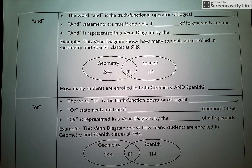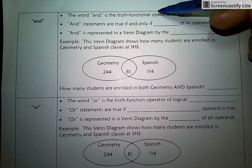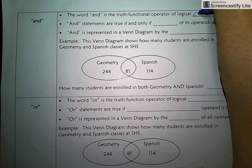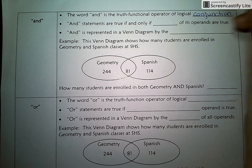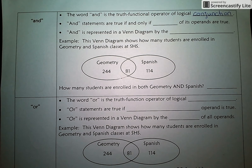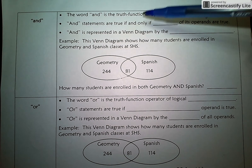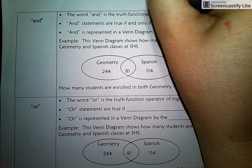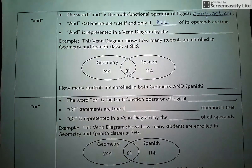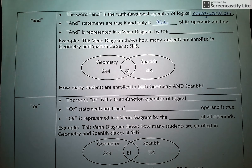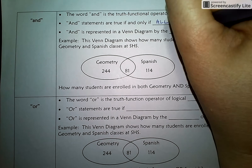The word AND is considered a truth function operator of a logical conjunction. When we use the word AND, we're saying that the statements are true if and only if all of the operands are true. For example, 'I like peanut butter AND jelly' means I like both of those things, not just one of them. In Venn Diagrams, an AND statement is represented by the overlapped zone.